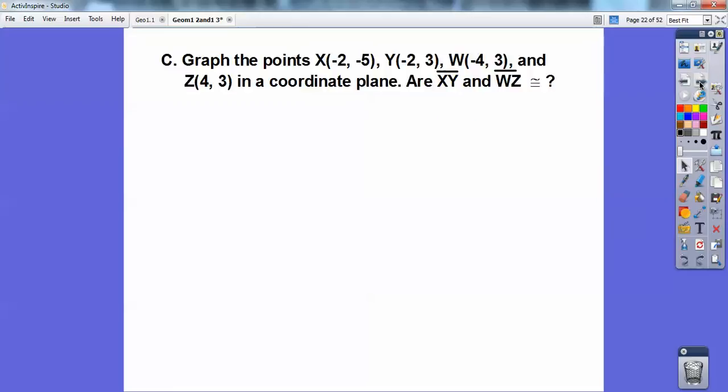So we're going to graph these points. Negative 2, 5, negative 2, 3, negative 4, 3, and 4, 3. And in the coordinate plane, and so are X, Y, and W, Z congruent. So are the segments X, Y, and segment W, Z congruent? All right, so let's go ahead and graph it. There's my coordinate plane. There's X right down there at negative 2, 5, so to the left 2, down 5. And then Y is at negative 2, 3, so to the left 2, up 3.